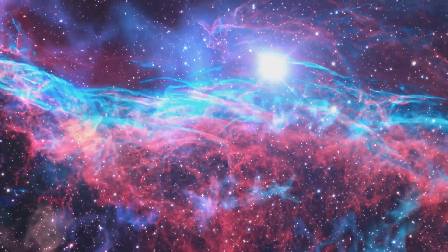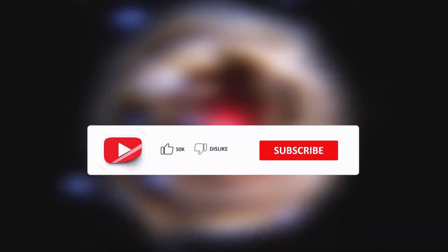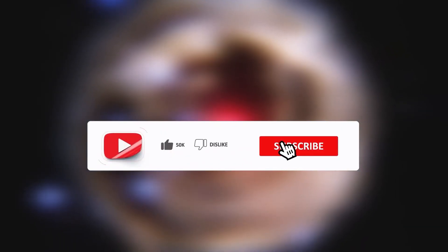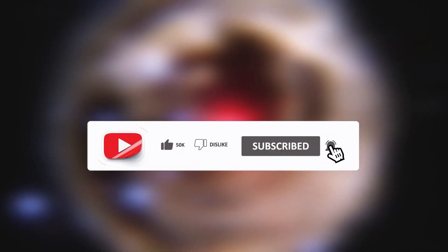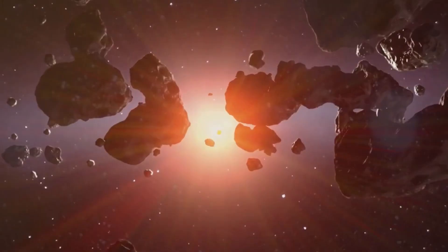If Betelgeuse does go supernova, and experts say it could happen any time from tomorrow to 100,000 years from now, this companion might not survive the blast. Could be vaporized in an instant, adding an extra layer of cosmic fireworks.